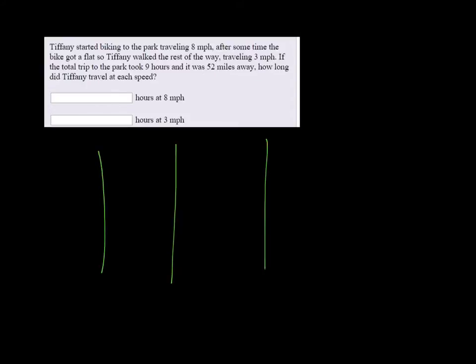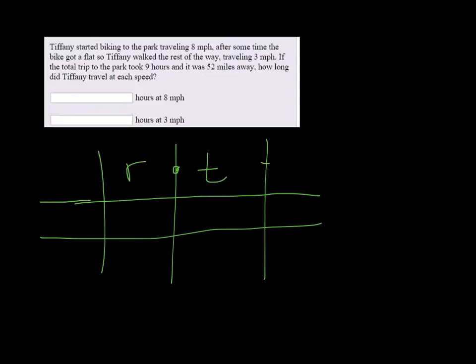So I'm going to start with a table and in our table we're going to do the formula rate times time equals distance. We're talking about two scenarios, some where she's biking and some where she is walking.